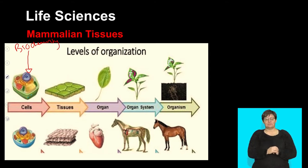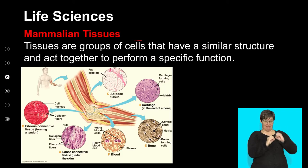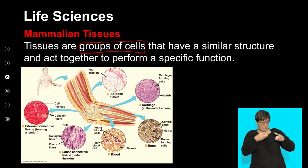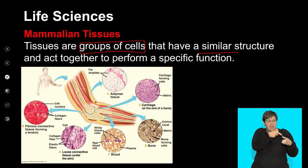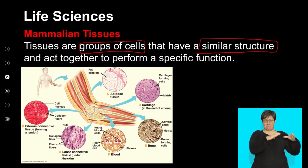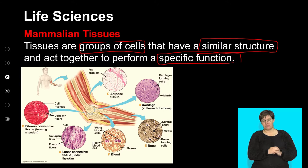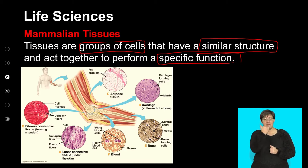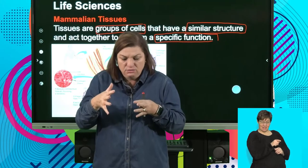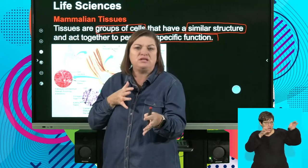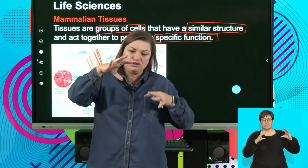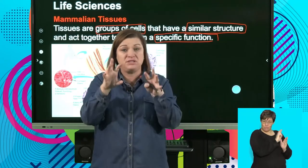A tissue is when I take a group of cells — not just one cell, but a group of cells — that all have a similar structure and I put them together to perform a specific function. Remember, a cell is just a model. We need to take the concept of a cell and change it — tweak it to perform its particular function. How my brain works is different to how my muscle works, so I take the basic concept of a cell and change it so all these cells look similar.